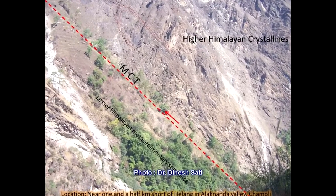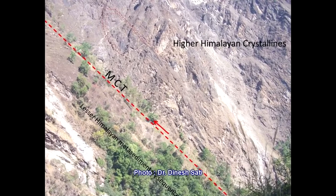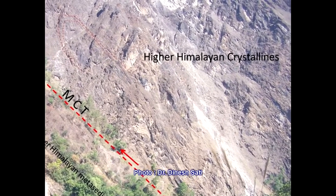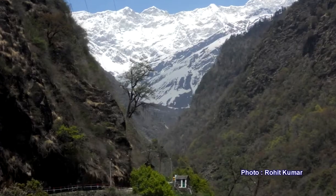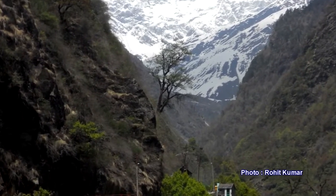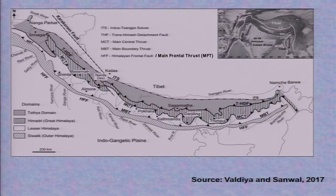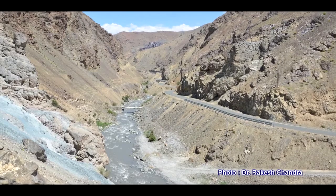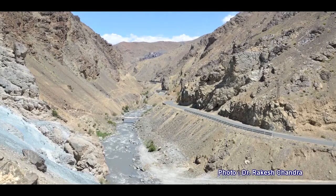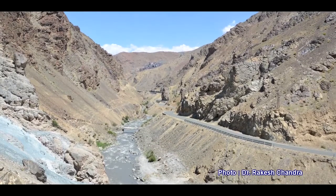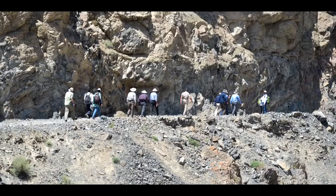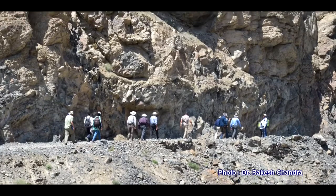Further towards the north, there is the MCT — Main Central Thrust. Beyond the Main Central Thrust we have the crystallines, meaning igneous rocks as well as metamorphic rocks. Beyond the central crystallines, there is again a thrust line — the Indo-Tsangpo Suture Zone — that is where the Indian plate and the Brahmaputra line meet. That thrust zone is followed by Ophiolite melange.